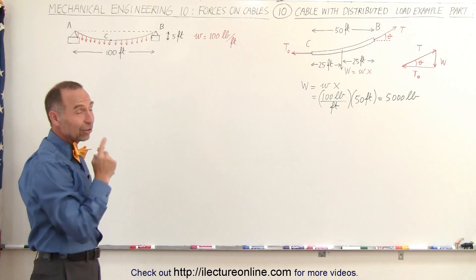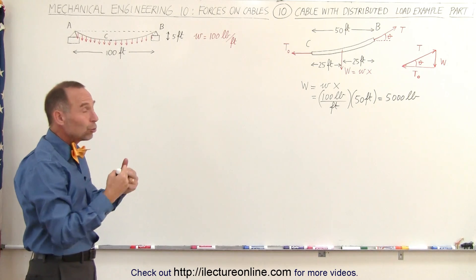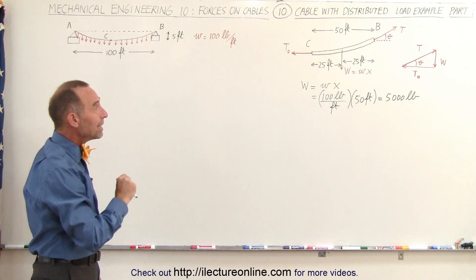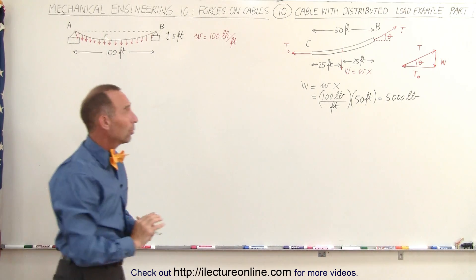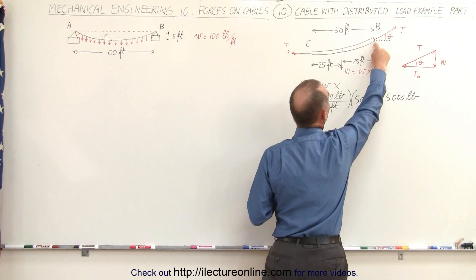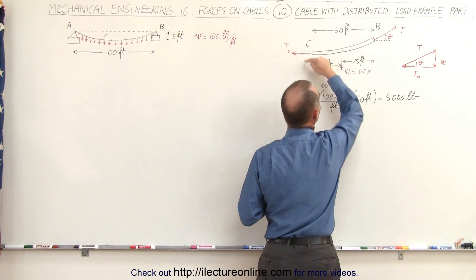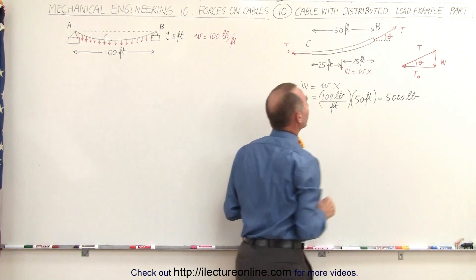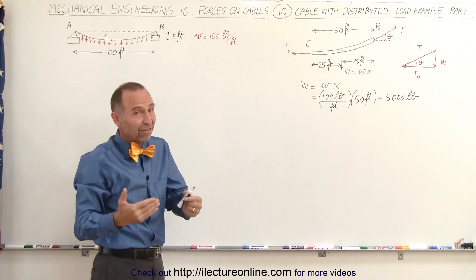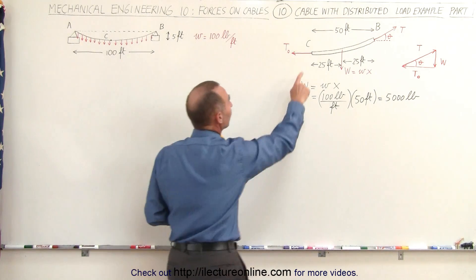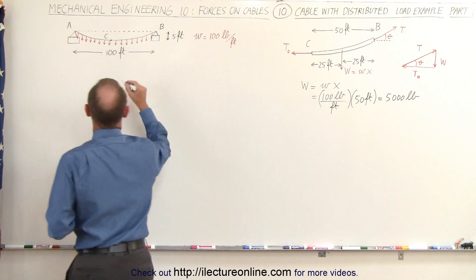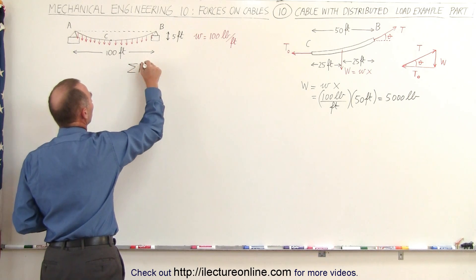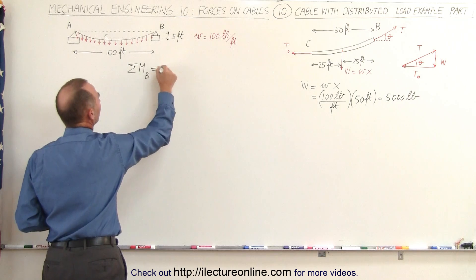Next we calculate T-sub-zero, the horizontal tension component. We do this using the sum of moments about point B equal to zero. We set point B as the rotational pivot, sum all moments about it, and knowing the sum must be zero allows us to find T-sub-zero.